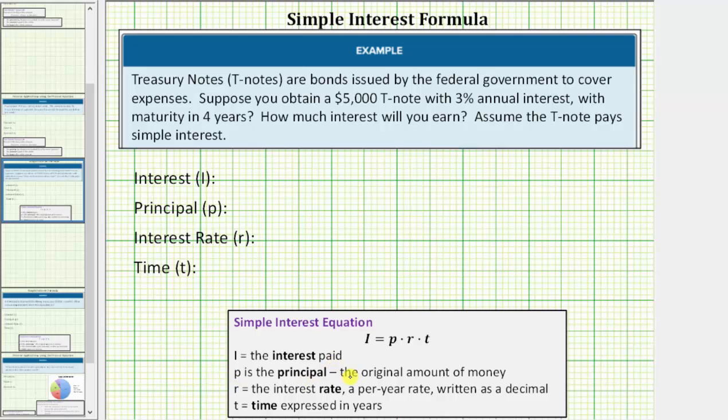P is the principal, which is the original or starting amount of money. R is the interest rate, which must be a per year rate written as a decimal, and T is the time expressed in years.